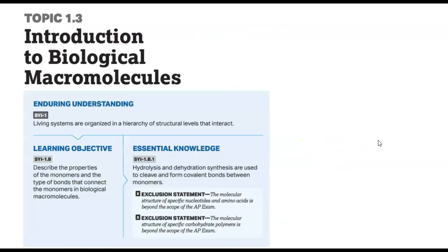The next topic is 1.3, introduction to biological macromolecules, focusing specifically on hydrolysis and dehydration synthesis. Note the exclusion statements: the molecular structure of specific nucleotides, amino acids, and carbohydrate polymers is beyond the scope of the AP exam. You don't need to identify them specifically — just recognize that they belong to that group.